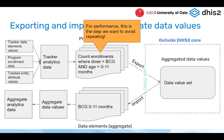A clarifying question about category option combos: the category option combo for export and the attribute option combo for export are actually built-in attributes of program indicators in DHIS2. However, the attribute for defining the target data element for export is not built in and must be set up as a custom attribute.